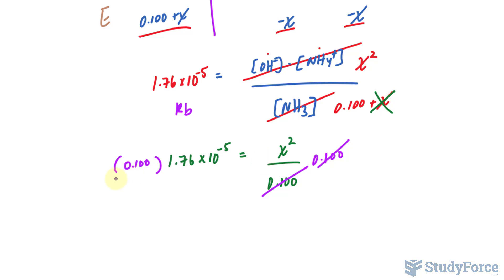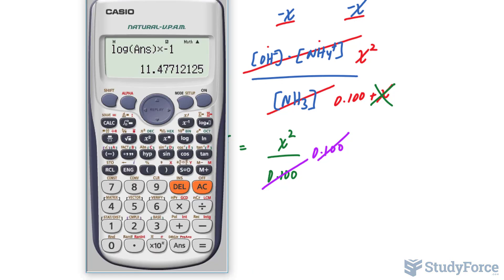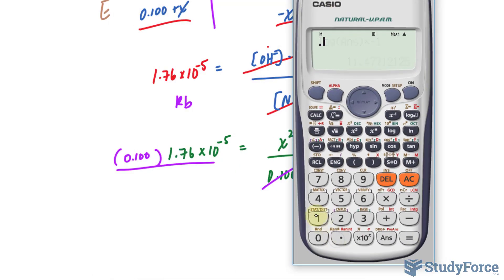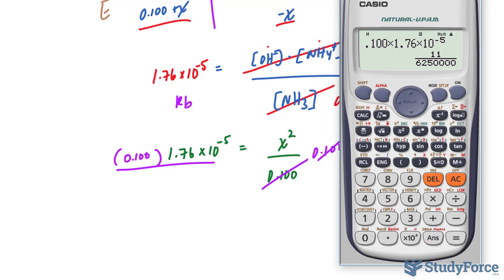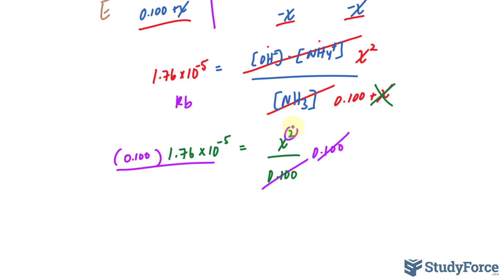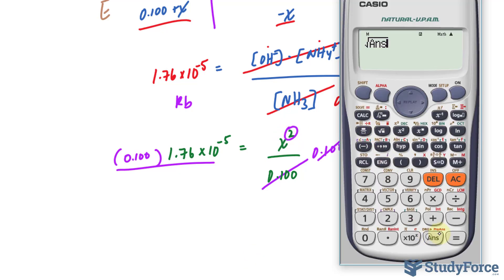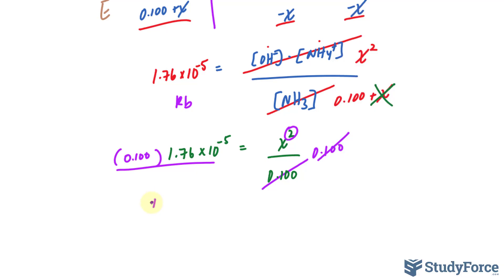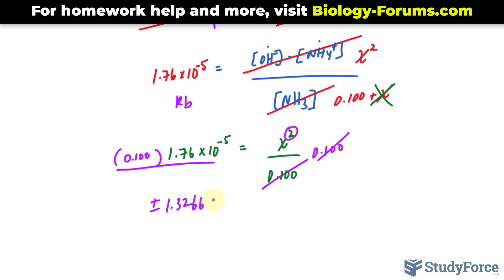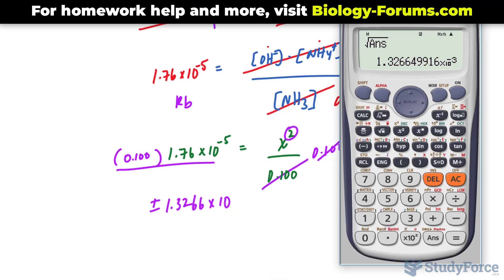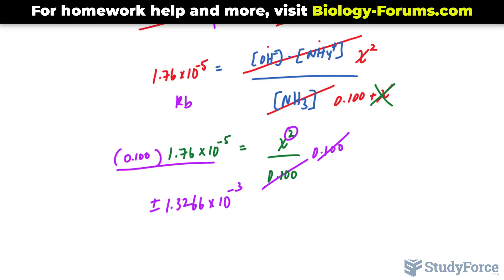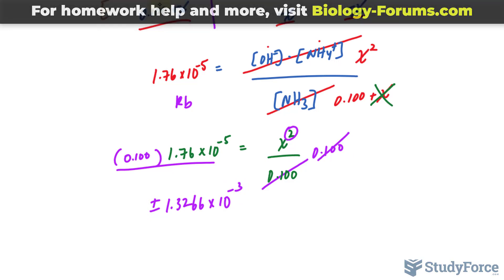And we have X to the power of 2 on one side. And on the other side, we have these two being multiplied. Let's go ahead and multiply them. 0.100 times 1.76 times 10 to the power of negative 5. That gives us the following number. And we will square root both sides at this point because that's how you get rid of this power of 2. So if I square root this number, I end up with plus minus 1.3266 times 10 raised to the power of negative 3. The reason why it's plus minus is because when you square root a number, there's always a positive and a negative version.